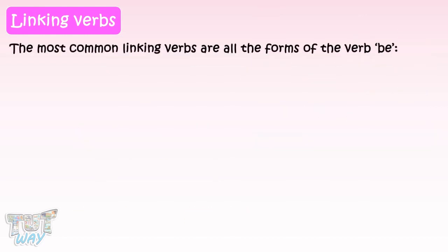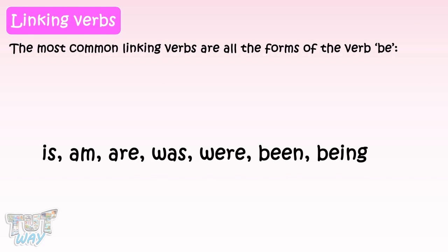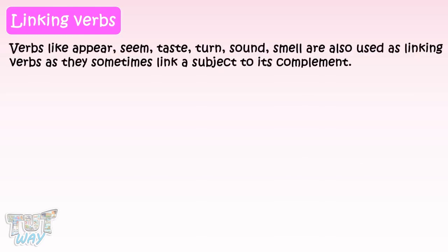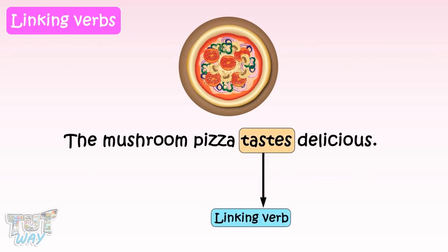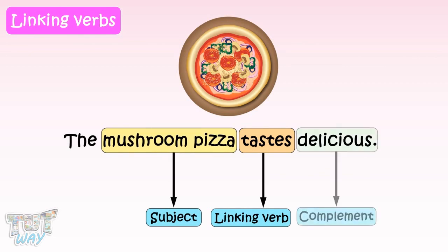The most common linking verbs are all the forms of the verb 'be.' It has seven other forms: is, am, are, was, were, been, being. Verbs like appear, seem, taste, turn, sound, and smell are also used as linking verbs as they sometimes link a subject to its complement. For example, 'The mushroom pizza tastes delicious.' The verb 'taste' links the subject 'mushroom pizza' to its complement 'delicious,' so it's a linking verb.